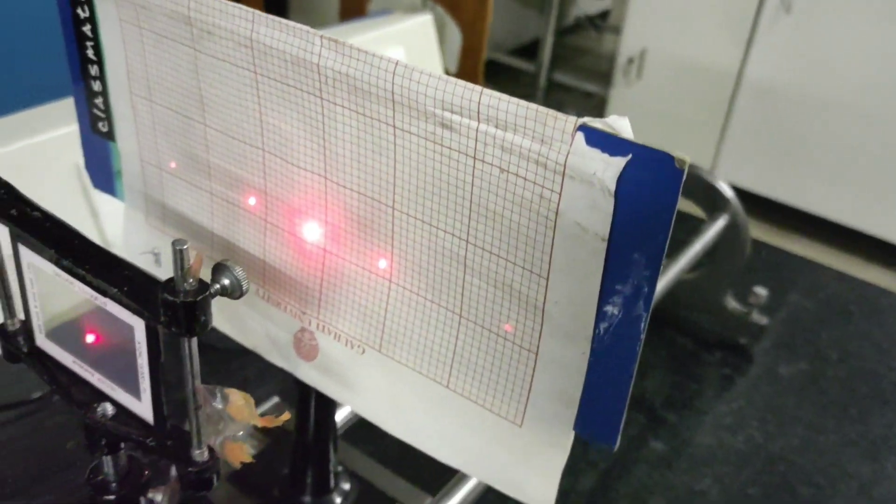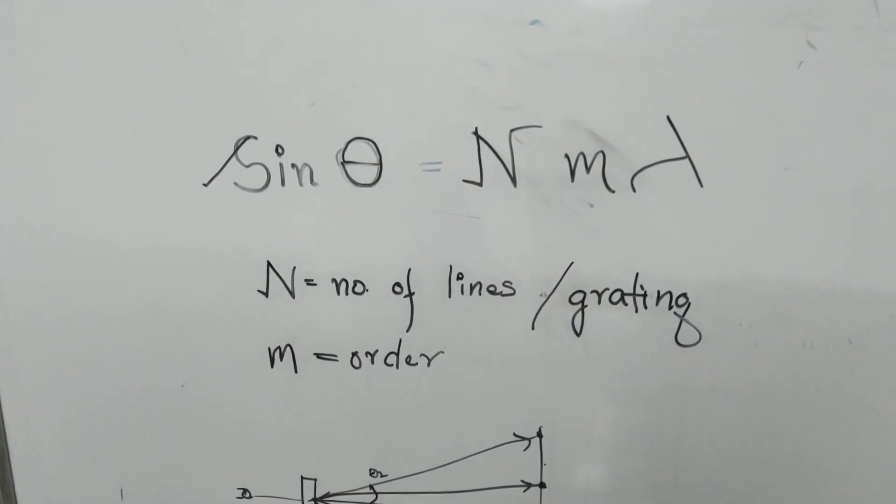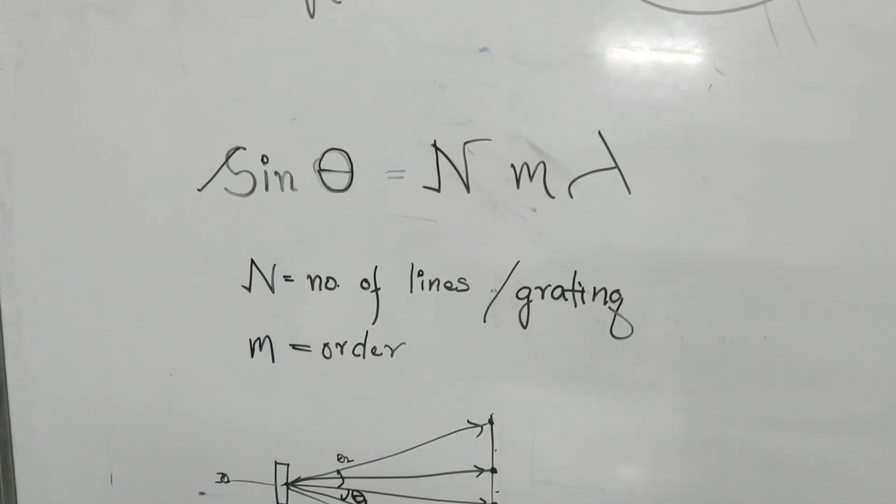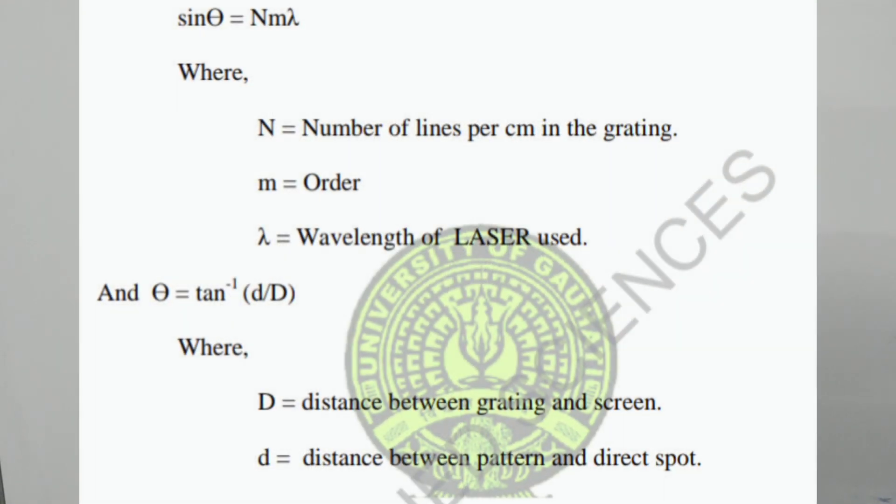To calculate the value of lambda, which is the requirement, we use the formula sinθ = Nmλ. Where θ is the angle of diffraction, θ₁ is the angle of diffraction for the first order and θ₂ is the angle of diffraction for the second order.